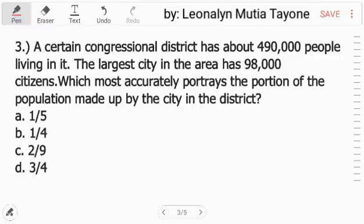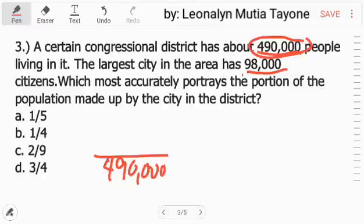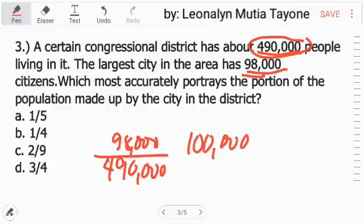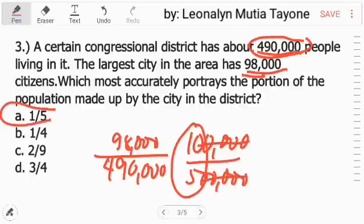Question number 3. A certain congressional district has about 490,000 people living in it. The largest city in the area has 98,000 citizens, which most accurately portrays the portion of the population made up by the city in the district. That means, this is the total of people living in it, that's our denominator, 490,000. Then our numerator, that is it, the 98,000. To make it easier, let's convert into, or round off into 100,000 over 500,000. And this is equivalent to 1/5.